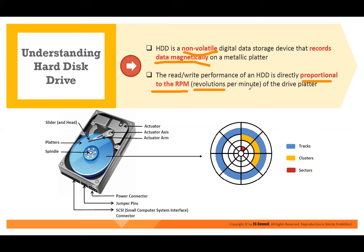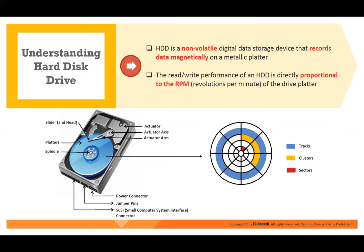How do you judge a disk's performance? It is directly proportional to the RPM — revolutions per minute — of the drive platter. This is the head, and this is the platter. How quickly it can spin determines the performance. The faster it spins, the quicker you can read the data, so read and write performance will differ.